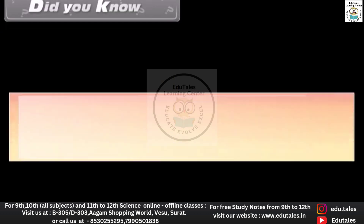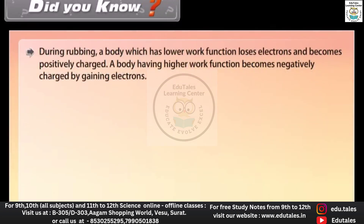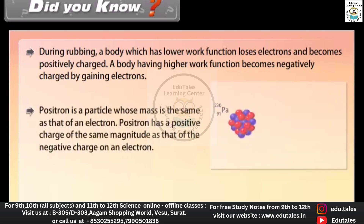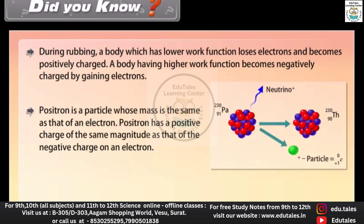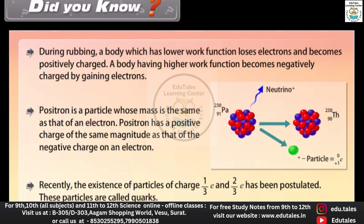Did you know: during rubbing, a body which has a lower work function loses electrons and becomes positively charged, while a body having a higher work function becomes negatively charged by gaining electrons. A positron is a particle whose mass is the same as that of an electron but with a positive charge of the same magnitude. Recently, the existence of particles of charge 1/3 e and 2/3 e has been postulated — these particles are called quarks.